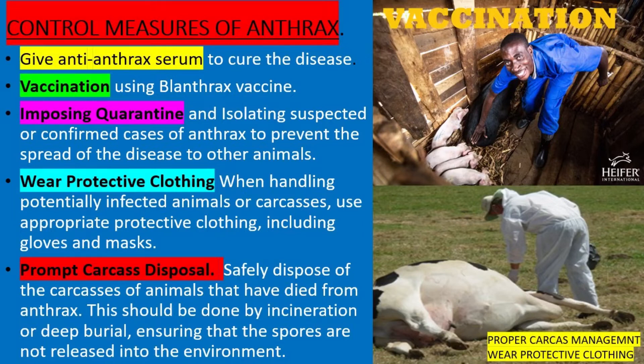Vaccination using the Blanthrax vaccine. Imposing quarantine and isolating suspected or confirmed cases of anthrax to prevent the spread of the disease to other animals. Wear protective clothing when handling potentially infected animals or carcasses, including gloves and masks. Prompt carcass disposal: Safely dispose of the carcasses of animals that have died from anthrax. This should be done by incineration or deep burial, ensuring that the spores are not released into the environment.